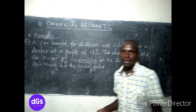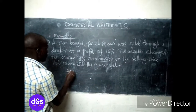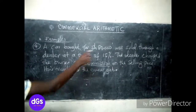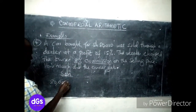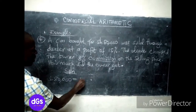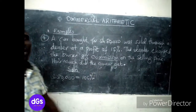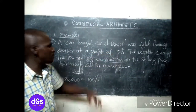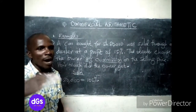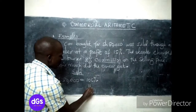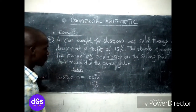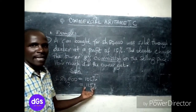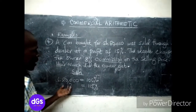How much did the owner get? Let's apply this. We say that 80,000 is our original price, equivalent to 100 percent. Since the car is sold at a profit of 15 percent, the selling price should be 115 percent. So if 80,000 is 100 percent, what is 115 percent?